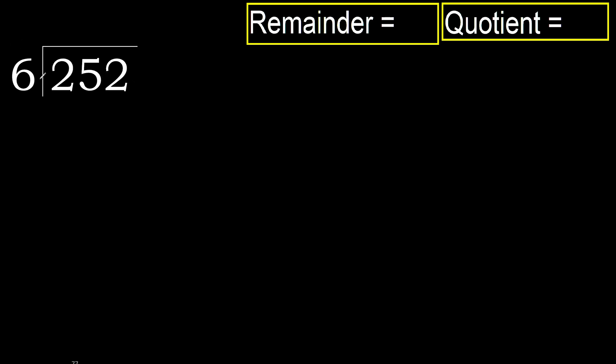252 divided by 6. 2 is less, therefore next. 25 is not less, therefore with 25. 6 multiplied by which number is nearest to 25 but not greater?